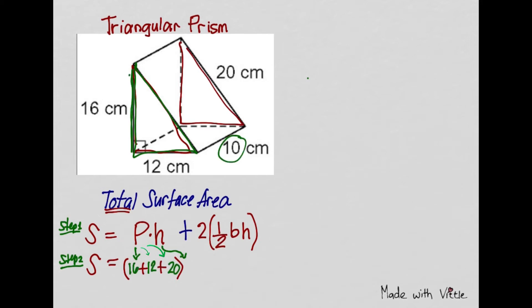The height that we're going to use here is the length of one of the rectangles. They're all the same, 10 cm. The length of the rectangles, because this is your lateral. All the rectangles, the sides that are rectangles, are the lateral surface of this triangular prism. So the height will be this 10 cm.